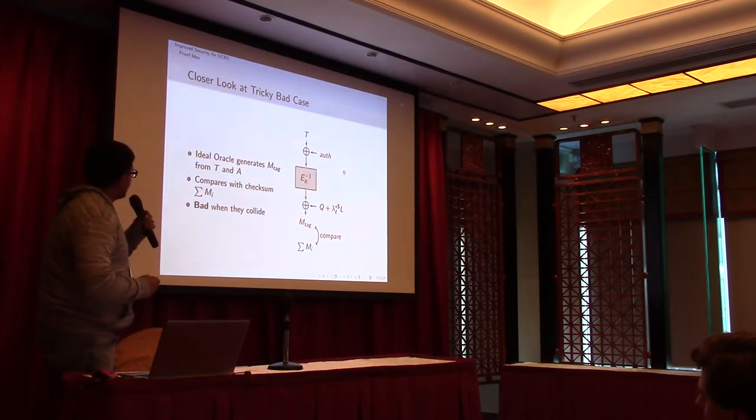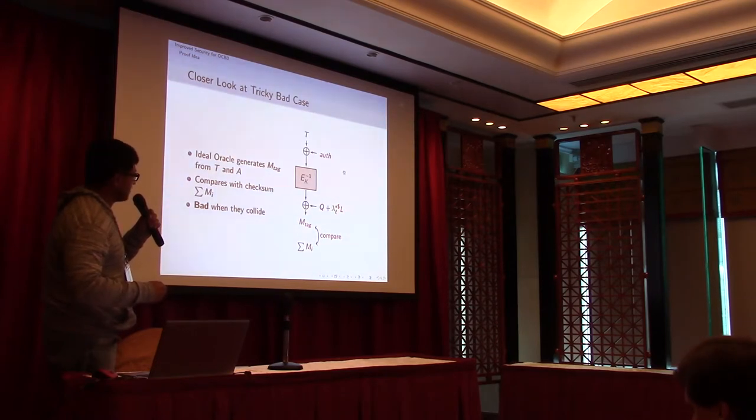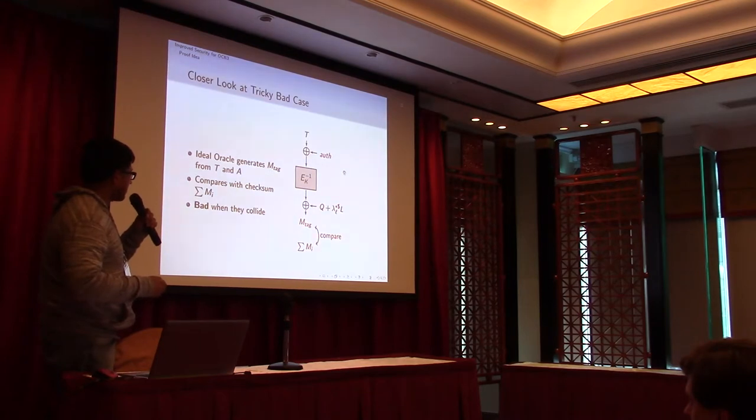So now let's take a closer look at what's really happening. This is the final step in the verification. We have this authentication tag that gets passed through the block cipher, and it gets added to Q plus some constant. So Q depends on the nonce. This L is the masking key, if you remember, which is just the block cipher called on zero. And this outputs the m_tag, and then we compare whether this m_tag is same as summation of m_i. So this is the check, and if they match, that means verification is going to succeed, which is bad because then a forgery attack is being made. So the main goal would be to bound this bad probability.